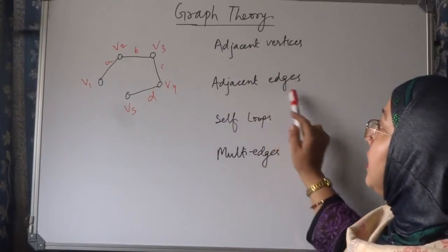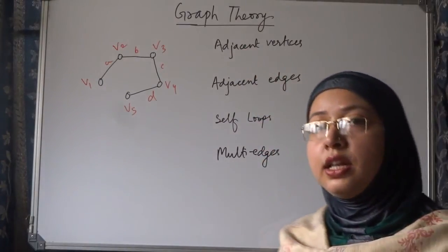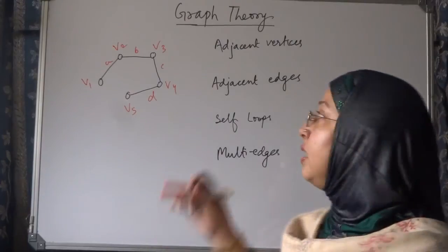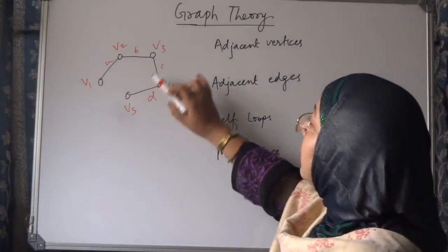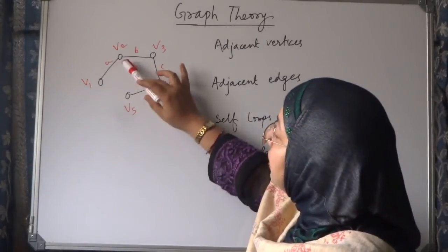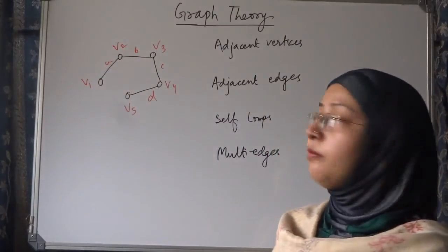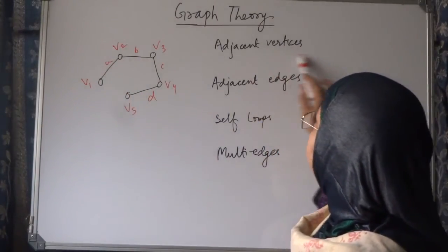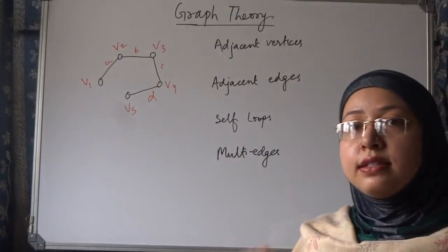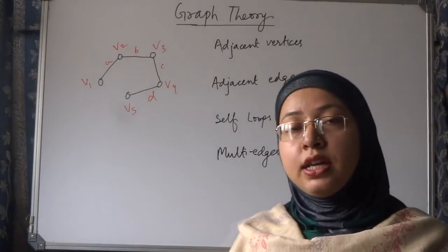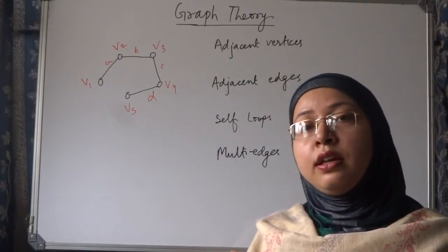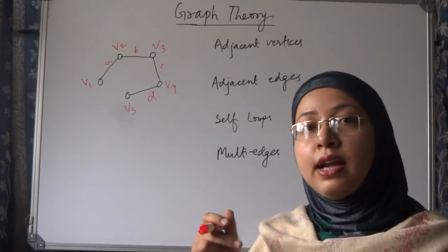That is adjacent vertices, adjacent edges, self-loop, multi-edges. Now, we shall see what are these. I have just now told you that v1 and v2 are known as adjacent vertices for edge a. So, the vertices which join the edge together, that is known as adjacent vertices.